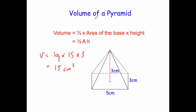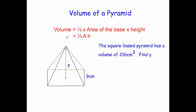Let's have a look at another question. This time the square-based pyramid has a volume of 216cm³. Find y.